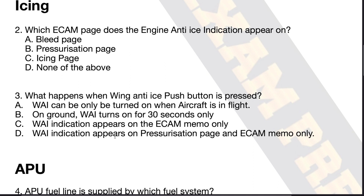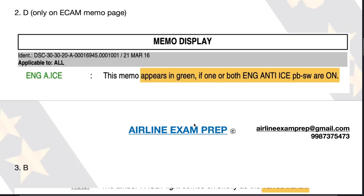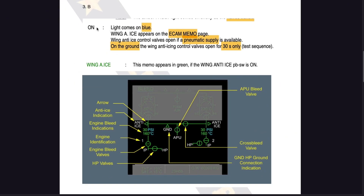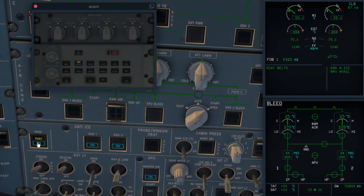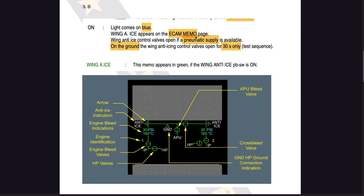Back to the question. Looking at the FCOM: options C and D are obviously wrong. Wing anti-ice indication appears in the ECAM memo only — that is incorrect, as we've just seen it appears on the bleed page as well. Option D is also incorrect. The FCOM extract says: when you switch it on, the light comes on in blue, wing anti-ice appears on the ECAM memo page, and the wing anti-ice control valves open if pneumatic supply is available. On the ground, the wing anti-ice control valves open for 30 seconds only — it's a test sequence. Why not more than 30 seconds? Because the anti-ice is hot air blowing onto the wing surface, and you don't want to damage the wings.